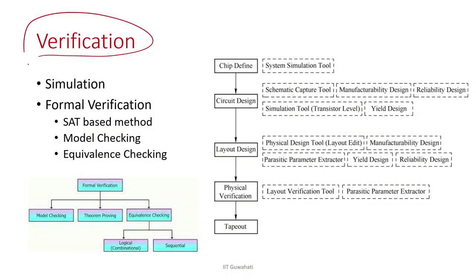What are other important aspects associated with the EDA process? The next important factor is verification. What is verification? You basically check whether your circuit is working correctly. For example, when you convert your C code into RTL, you check whether your RTL is functionally equivalent to your C code. Similarly, when you convert RTL into gate level, you physically check whether the gate-level design is functionally equivalent to the RTL.